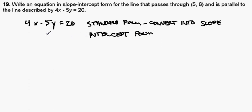So, to do that, let's go ahead and subtract 4x from both sides of the equation. So, here I have negative 5y equals negative 4x plus 20.